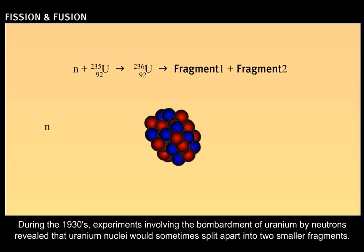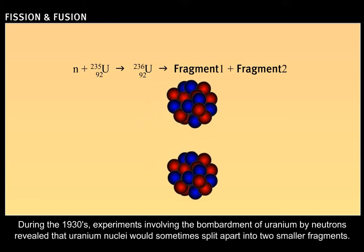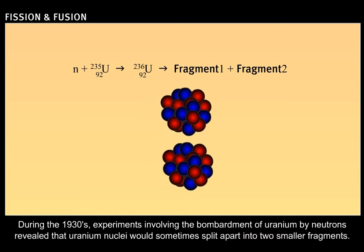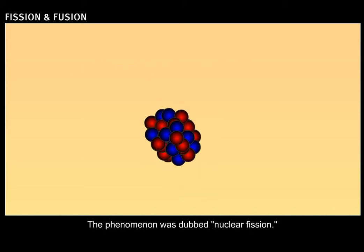During the 1930s, experiments involving the bombardment of uranium by neutrons revealed that uranium nuclei would sometimes split apart into two smaller fragments. The phenomenon was dubbed nuclear fission.